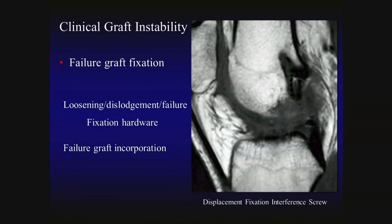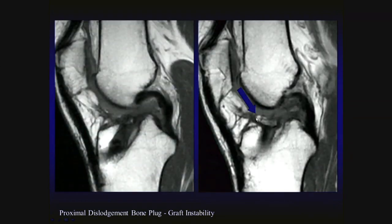Another cause of clinical graft instability is failure of graft fixation. On MR imaging, we may see loosening, dislodgement, or failure of graft fixation hardware — as in a patient who had dislodgement and distal migration of an interference screw related to ACL reconstruction. We may also see failure of graft incorporation, such as failure of incorporation of bone plugs in a prior bone patellar tendon bone ACL reconstruction, where the bone plug is dislodged and migrated proximally up into the joint — this patient presented with graft instability related to failure of incorporation of the distal margin of the ACL graft.